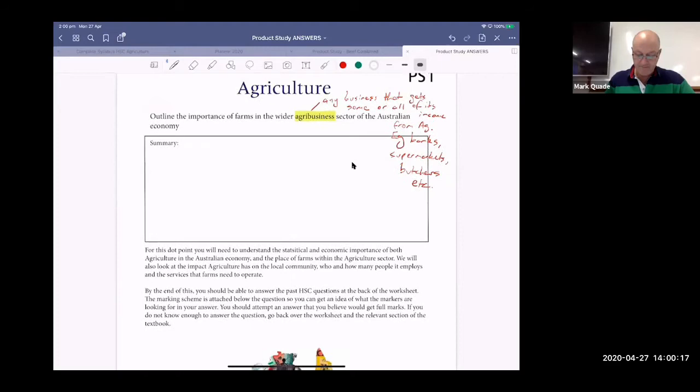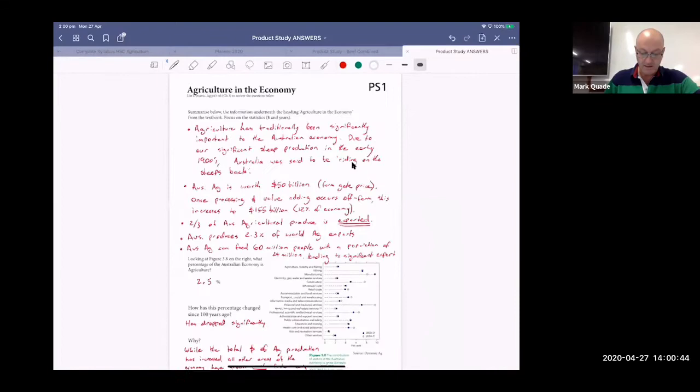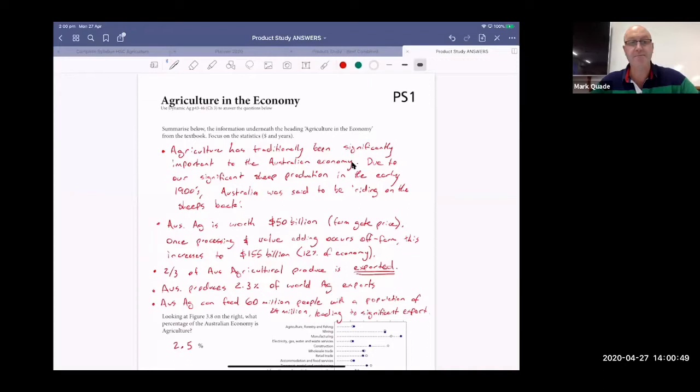So farm product study. For this dot point, you'll need to understand the statistical and economic importance of both agriculture and the Australian economy, and the place of farms within the ag sector. We'll look at the impact agriculture has on the local community, who and how many people it employs, and the services that farms need to operate. Your textbook is really good for this dot point, pages 43 to 46. Basic summary skills: to summarize the information under the heading agriculture in the economy from the textbook.